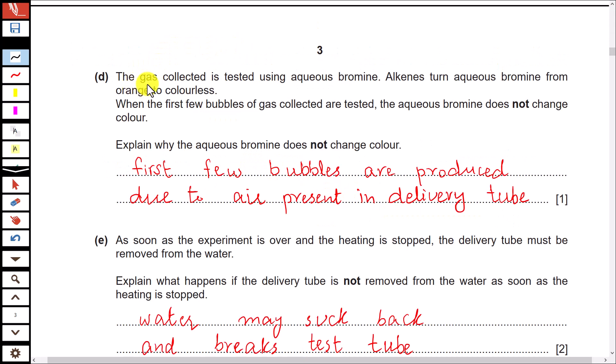The gas collected is tested using aqueous bromine. Aqueous bromine is used to test alkenes. When first few bubbles of gas collected are tested, aqueous bromine does not change color.